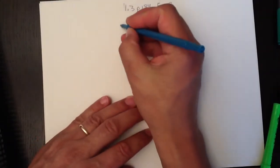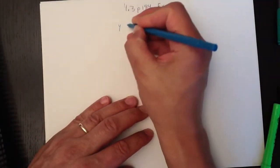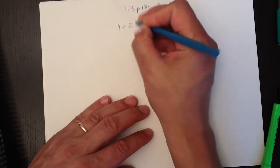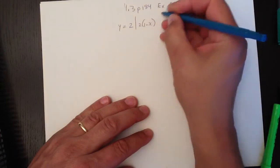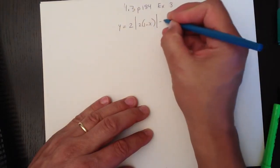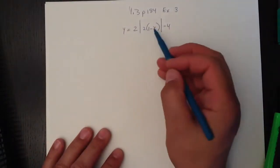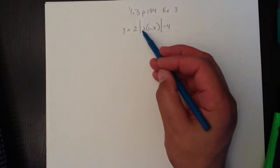So that one looks like this. It says j of x, which I'm going to call y, equals 2 times the absolute value of 2 times 1 minus x, absolute value minus 4. And they're trying to be tricky by putting some junk in brackets here, but you know you can just multiply that through and that's a piece of cake.